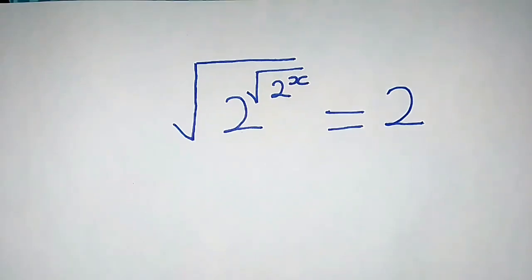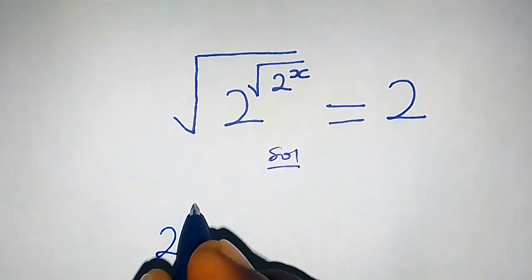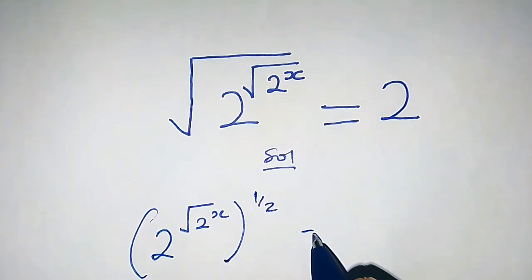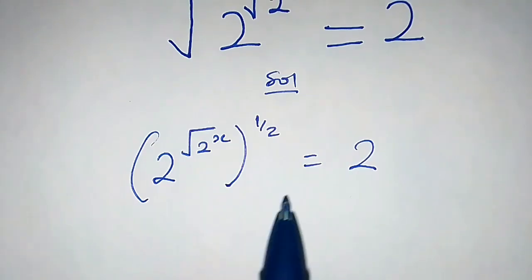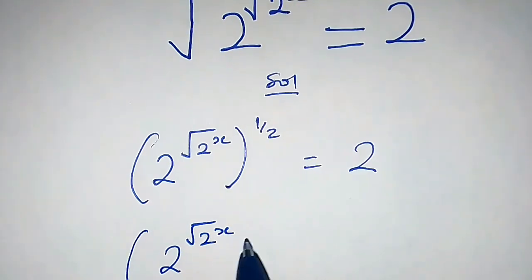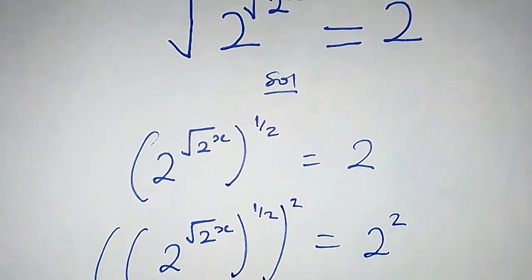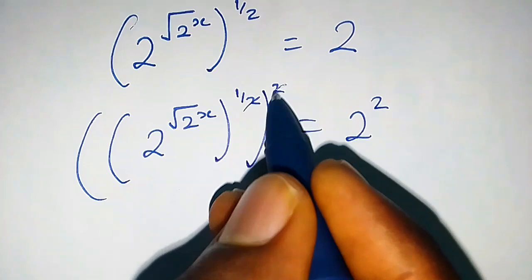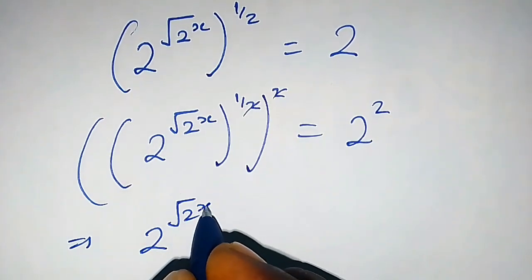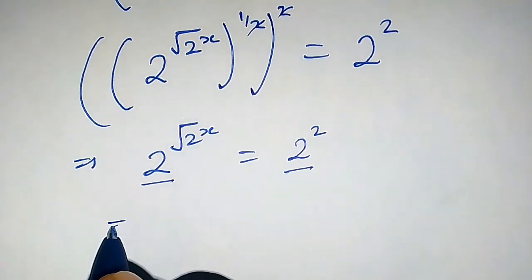How do we find the value of x in this equation? The left-hand side can be written as 2 raised by square root of 2 raised by x, and this equals 2. If we square both sides, we get 2 raised by square root of 2 raised by x times 2, which equals 2 squared. The halves cancel out, so we are left with 2 raised by square root of 2 raised by x equals 2 squared.